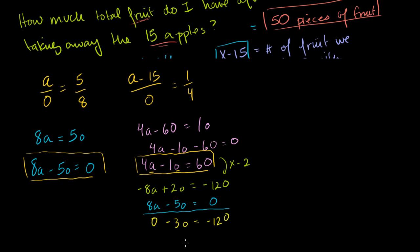Or O equals, if you divide both sides by minus 3, you get O equals 40. So the oranges equals 40, and that's before and after. The O never changes. O equals 40.